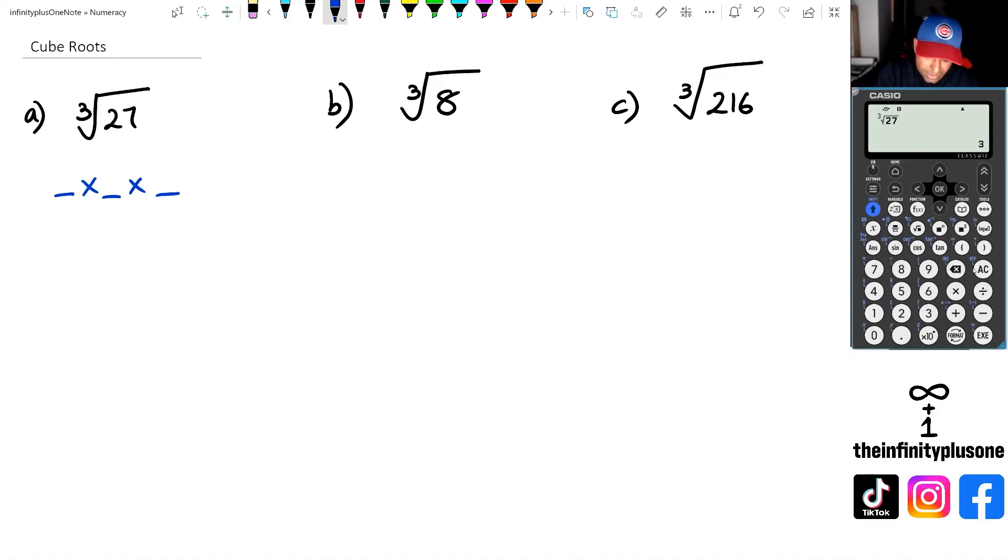So as you can see we've got cube root of 27 is 3. And if we test it out, so we're going to go 3 times 3 times 3. Now 3 times 3 is 9, 9 times 3 is 27. So we can say that the cube root of 27 is equal to 3.